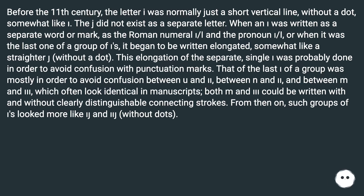The elongation of the last I of a group was mostly in order to avoid confusion between U and II, between N and II, and between M and III, which often look identical in manuscripts — both M and III could be written with and without clearly distinguishable connecting strokes. From then on, such groups of I's looked more like IJ and IIJ, without dots.